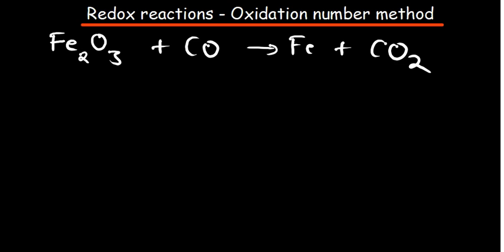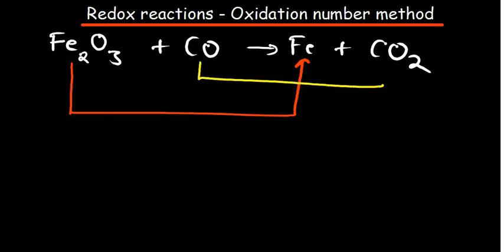The first thing you want to do is identify what is necessary to balance in terms of oxidation states. In this case, iron is related to the iron on the other side, and carbon is related to the carbon on the other side. Notice that oxygen is usually standard, and we know its oxidation state.